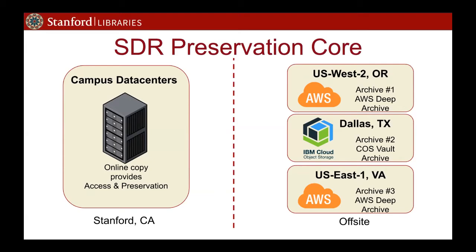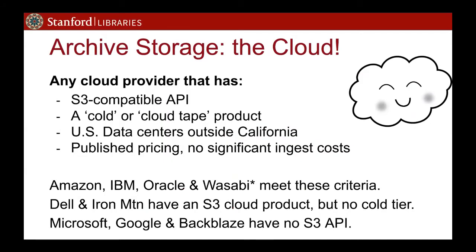What's missing from this slide is the glue that handles the creation and distribution of archive copies — we wrote our own software called Preservation Catalog for that. For archive storage in the cloud, we decided early on to focus purely on the S3 API. Writing code to support S3, Azure, and Google Cloud Platform was too much of an engineering lift. Focusing on S3 still gave us access to multiple different vendors, satisfying our multi-vendor, multi-location criteria.